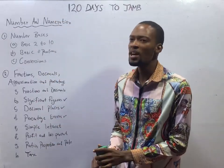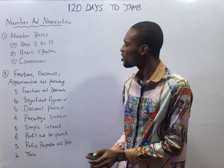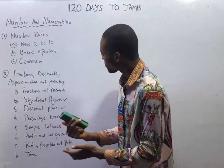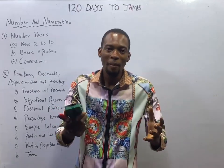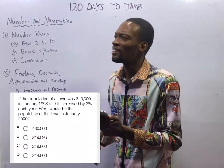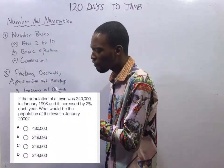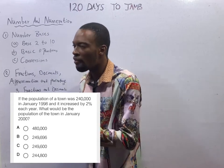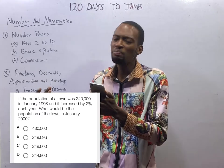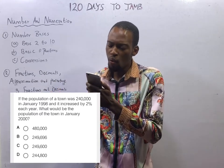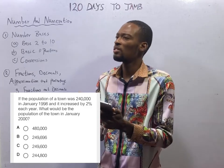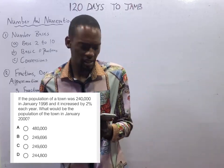We shall be looking at a question that needs us to find a percentage, or to increase a particular number by a percentage. If the population of a town was 240,000 in January 1998, and it increased by 2% each year, what would be the population of the town in January 2000? Look at it.